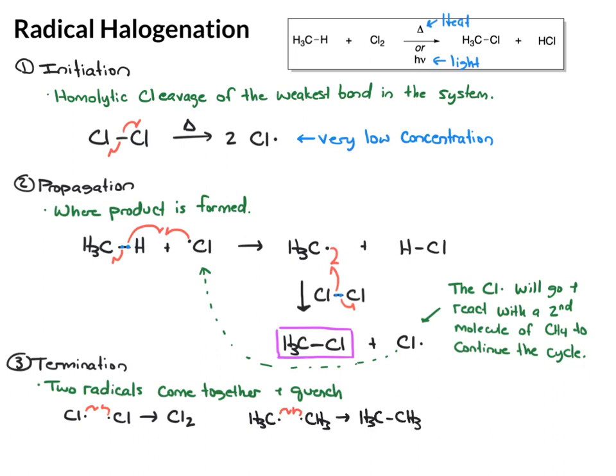The third thing that can happen is a methyl radical and a chlorine radical could run into one another. If that happens, those will pair and give us a molecule of the desired product. But it's really, really important to know this isn't how you get significant amounts of product. The product is formed in this propagation. This is just one pathway that does lead to some product.